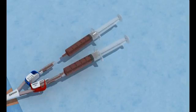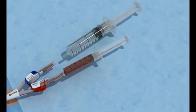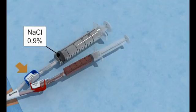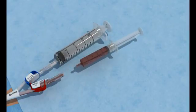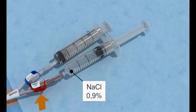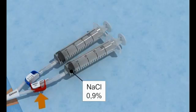Flush both lumens. Replace the aspiration syringes one by one with 20ml syringes filled with a sterile 0.9% saline solution. Open the clamp and flush the lumen. Close the clamp. Repeat the same procedure for the other lumen.